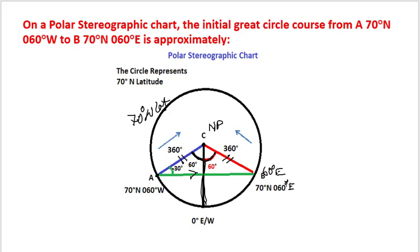This would be 30 degrees and this angle would be 30 degrees. How come 30 degrees? 180 minus 120, which is the sum of both the angles, divided by 2 will give us 60 by 2 is equal to 30 degrees.